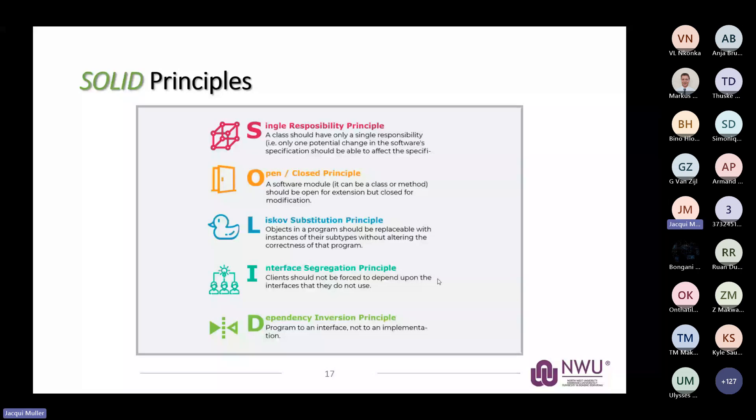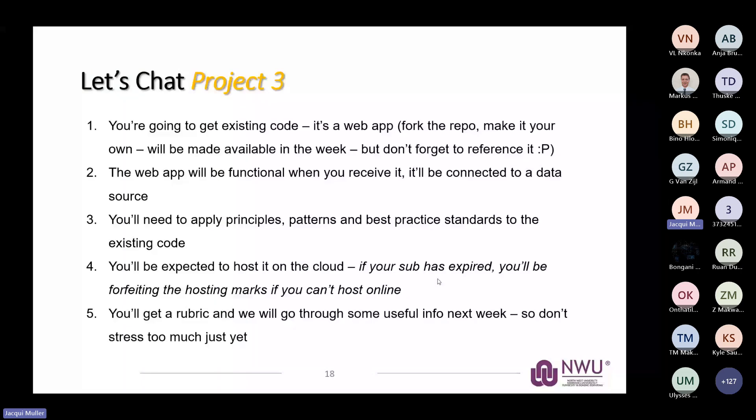Let me discuss project three before taking questions. For project three, you'll get an existing codebase that is scaffolded by default. Next week's class will demonstrate the scaffolding of a solution — the video will also be uploaded to Fundi. You will fork that repository — made available on GitHub during the week — create your own repository, and apply the repository pattern to it. When you receive the web application it'll already be functional and connected to a data source, so you don't need to stress about having your own database active.